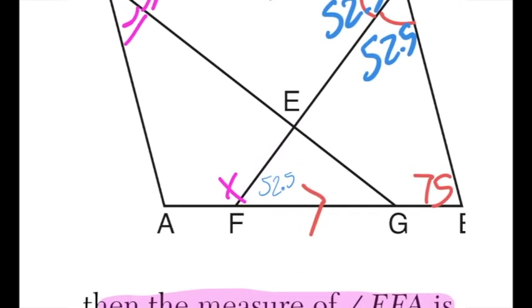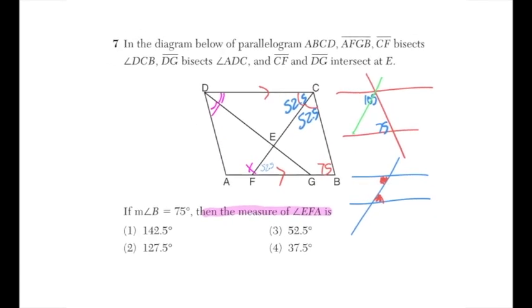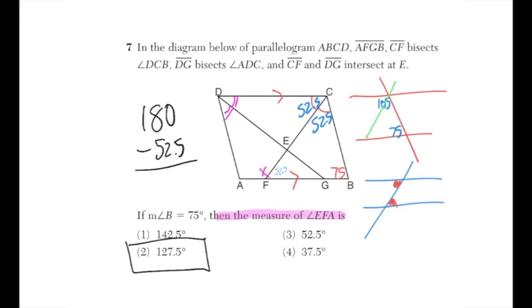Angles AFE and EFG form a linear pair, so they're supplementary. Therefore angle EFA = 180 − 52.5 = 127.5°. That is the answer.